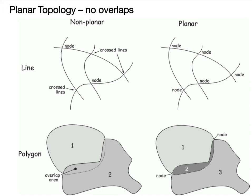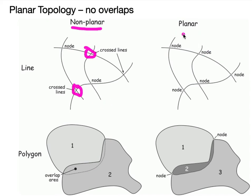For example, here we have a node which indicates that two lines intersect, and here there's no node, which means it's a crossed line — non-planar, as they don't fall in the same plane. The same thing applies to these areas: there's an overlap where one polygon sits below another, making them non-planar and hence non-topological. For planar data, we have nodes at every line intersection and no polygons on top of other polygons — so there are three distinct polygons here instead of just two.